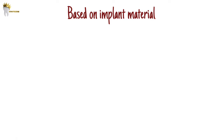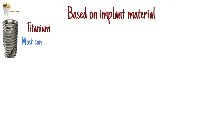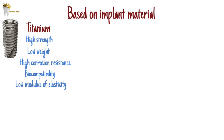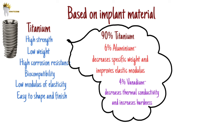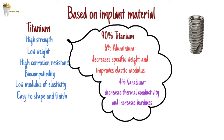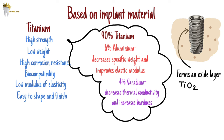On the basis of implant material, we have titanium alloy implants and zirconium implants. Most root form implants currently used are made of pure titanium or titanium alloys. Titanium offers high strength, low weight, high corrosion resistance, biocompatibility, low modulus of elasticity, and easy shaping and finishing capability. The most frequently used titanium alloy has 90% titanium, 6% aluminium (which decreases specific weight and improves elastic modulus), and 4% vanadium (which decreases thermal conductivity and increases hardness). When exposed to air, titanium or its alloy immediately forms an oxide layer — titanium dioxide — over its surface, which plays an important role in corrosion resistance, biocompatibility, and osseointegration.